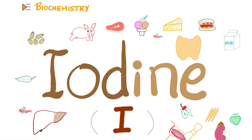Hey guys, it's Medicosis Perfectioneros, where medicine makes perfect sense. Another day, another biochemistry video. In previous videos, we talked about vitamins — the fat-soluble vitamins and the water-soluble vitamins — as well as the vitamin-like substance known as choline, which is important for your body. Then we started talking about minerals. We talked about zinc, copper, selenium, and chromium, and today let's talk about iodine.